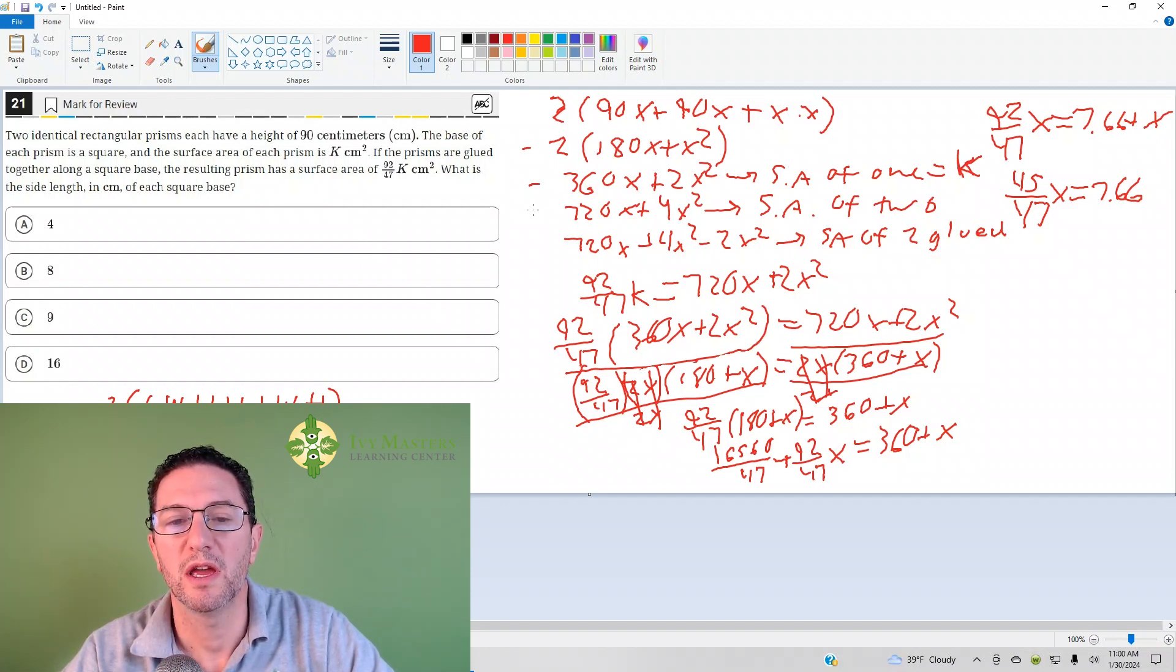Okay. So if I double that, then I'm going to get the surface area of both of those rectangular prisms, 720x plus 4x squared.